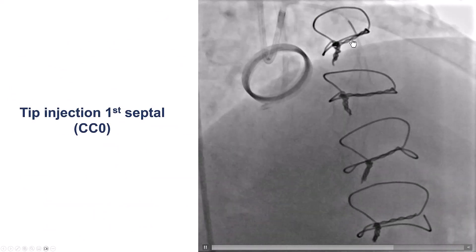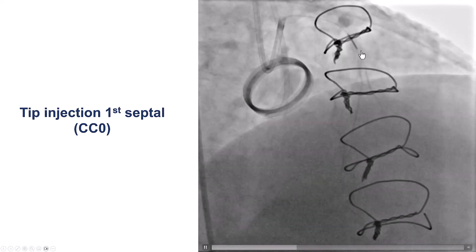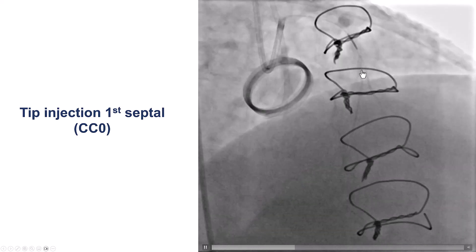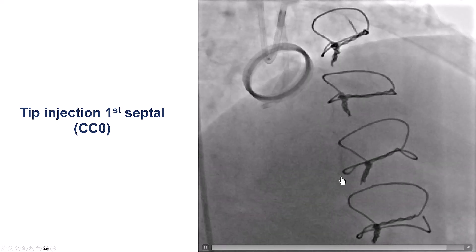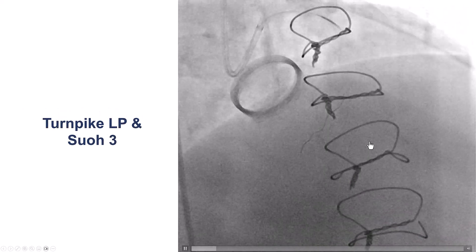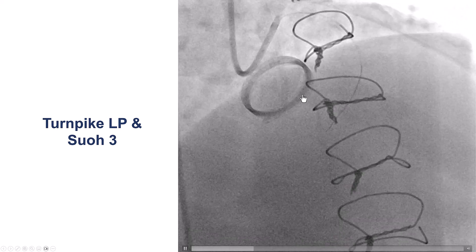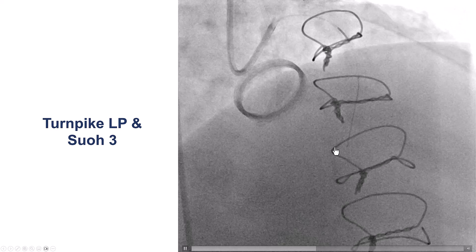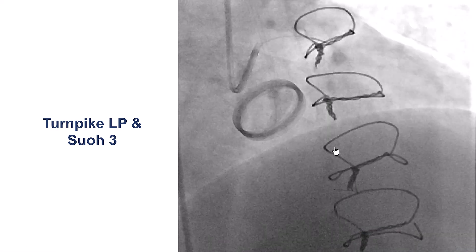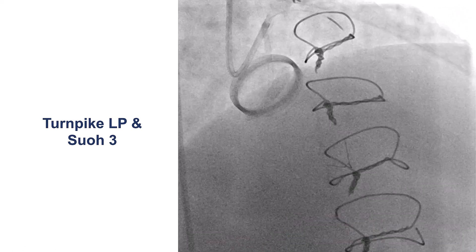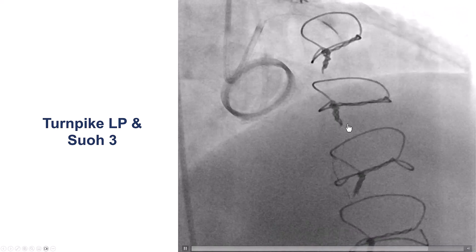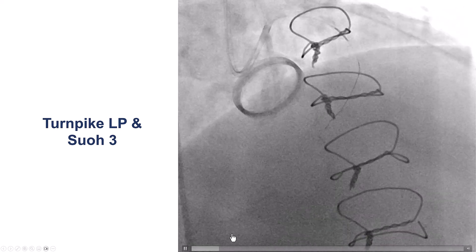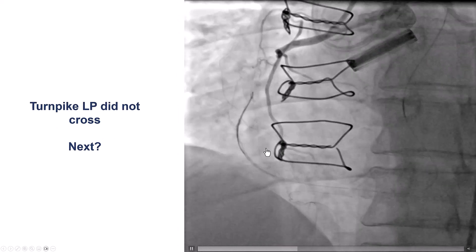We entered the first septal using a microcatheter. We did surfing — it didn't work. Then we did a tip injection; we don't really see a continuous connection between the septal and the right posterior descending artery. Nevertheless, we decided to surf it. This is a Turnpike LP along with the SUO3 guide wire. We're advancing the guide wire with simultaneous rotation, not using a torque — using this surfing technique. If it doesn't work, we pull it back and redirect. Eventually it does find a way and seems to be going in the right direction, as confirmed by contralateral injection.